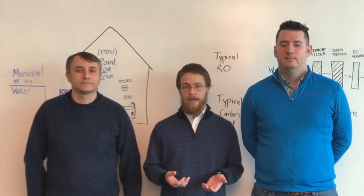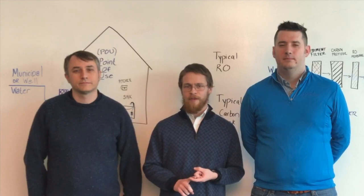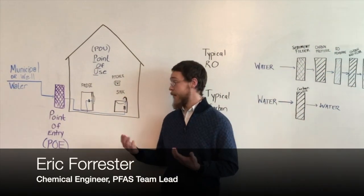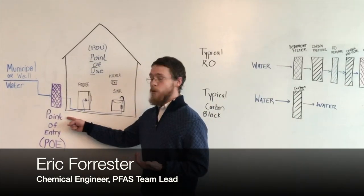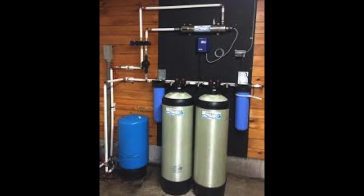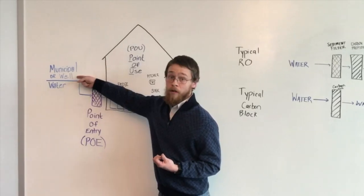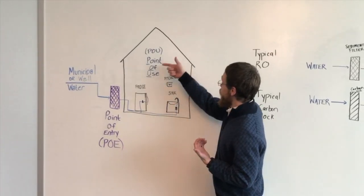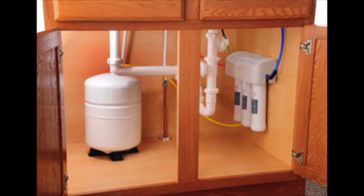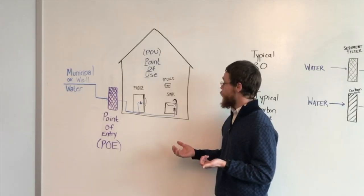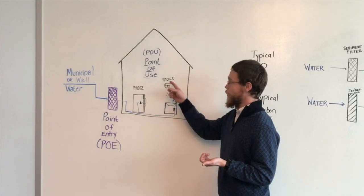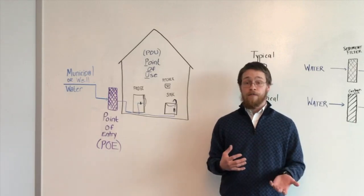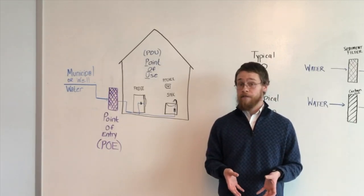One of the first questions we got is what exactly is the difference between a point-of-entry treatment system and a point-of-use treatment filter? So we put together a sketch to illustrate that difference. A point-of-entry treatment system treats water coming from either your local municipality or your own private well as it enters your home, before it actually gets into your pipes. In contrast, a point-of-use filter is treating water at the point that it is actually being used, including in your fridge, in a water pitcher, and under your sink. The design for each of these configurations is going to vary, so we're going to talk about just under-sink filters today.